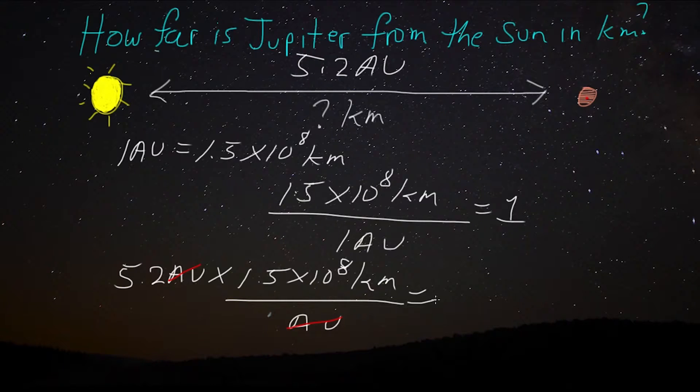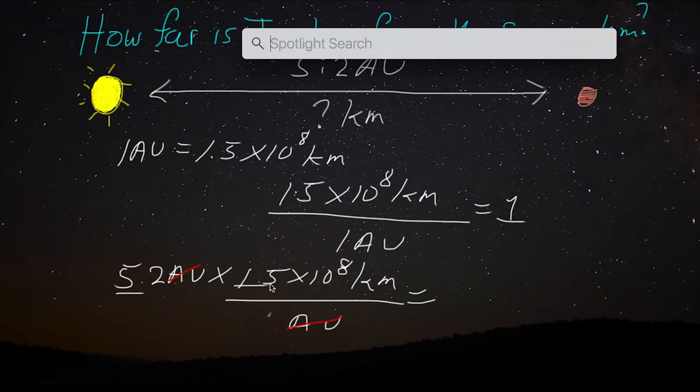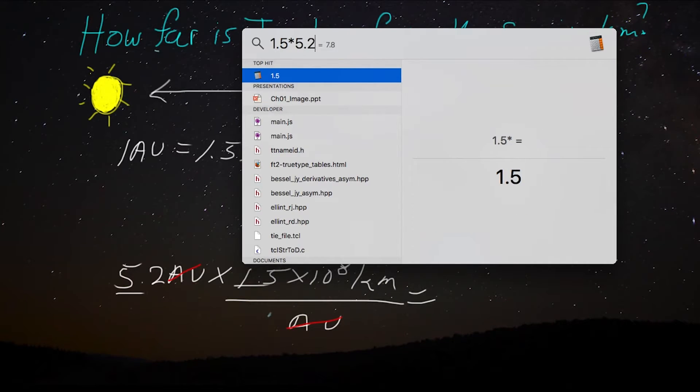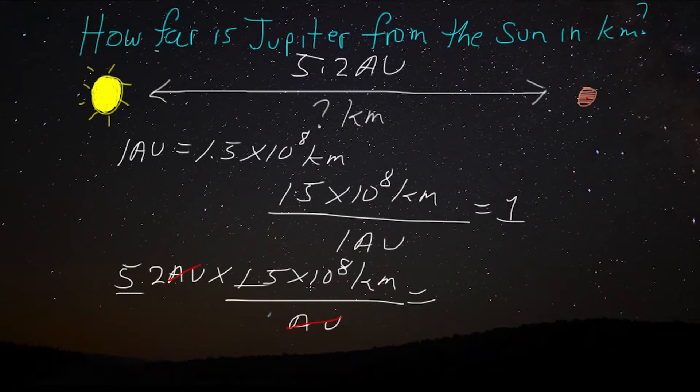The units can be treated like numbers. And we get a value of, well, I've simply gone to multiply 5.2 by 1.5 and I'm not good at math. So, let's go ahead and calculate that really quick. 1.5 times 5.2, 7.8. Okay, cool. So, 7.8 and just carry the 10 to the 8th kilometers.